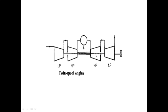In the twin spool engine, the HP turbine and LP turbine drive their respective compressors. At the end of expansion, the fluid still has sufficient energy to produce the necessary work output to drive the generator.